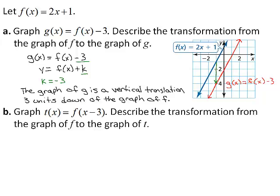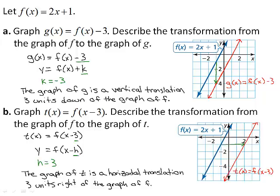Part b, graph t of x equals f of the quantity x minus 3. Describe the transformation from the graph of f to the graph of t. The function t is of the form y equals f of the quantity x minus h, where h equals 3. Because h is positive, the graph of t is a horizontal translation three units right of the graph of f.